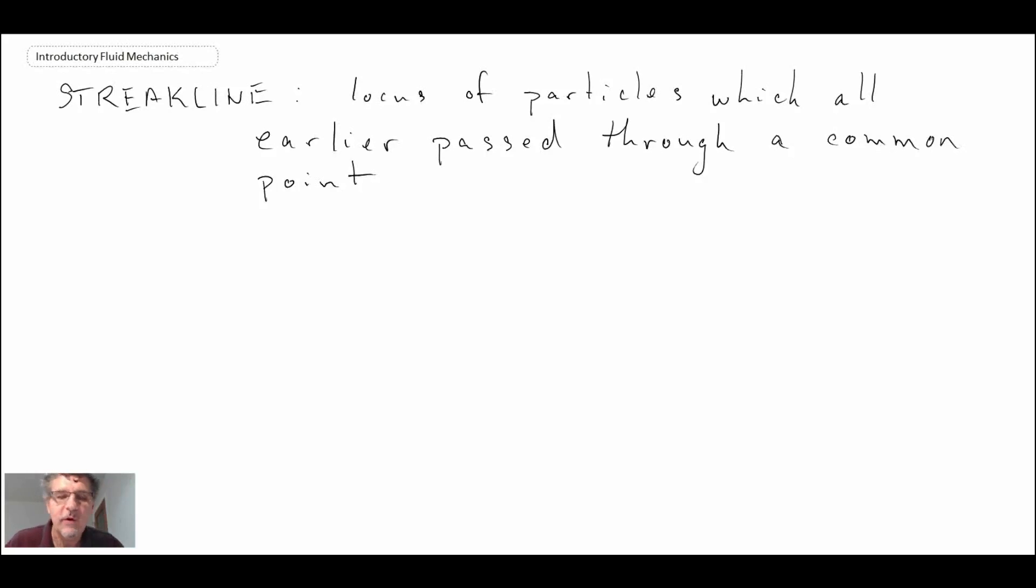The definition of a streakline is it's a locus of particles which all earlier pass through a common point. You may be thinking, well that's the same as a streamline, but it turns out that if you have non-steady flow, a streakline and a streamline will not necessarily be the same.